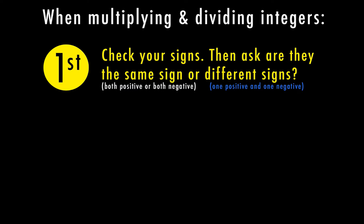When we're multiplying or dividing integers, the first thing we want to do is check our signs and ask if they're the same sign or different signs. The first step in multiplying and dividing integers is actually the exact same as when we're adding and subtracting integers — we want to first find out if they have the same sign or different signs.